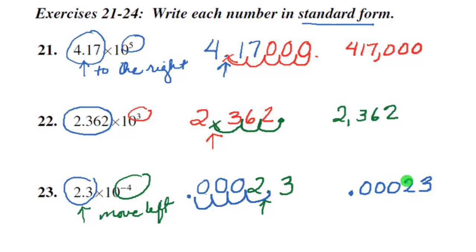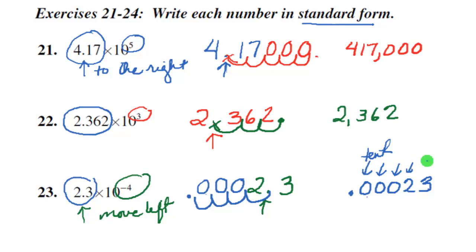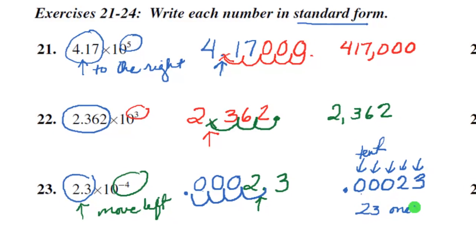Just a reminder about decimal place names: this is the tenths place, this is the hundredths, thousandths, ten-thousandths, and one-hundred-thousandths. So the way you would read this number is 23 one-hundred-thousandths.